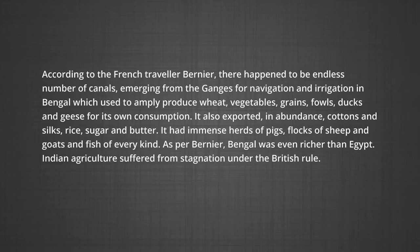Bengal also exported in abundance cottons and silks, rice, sugar, and butter. It had immense herds of pigs, flocks of sheep and goats, and fish of every kind. As per Barnier, Bengal was even richer than Egypt. However, on the contrary, Indian agriculture suffered from stagnation under the British rule.